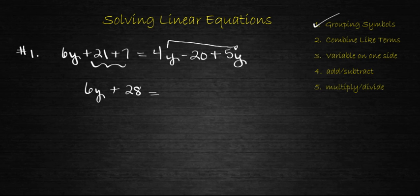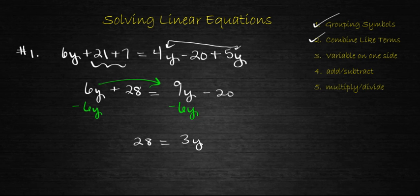On the right side, we have two variable terms. So 4y + 5y is going to give me 9y - 20. From there, we need to make sure that the variable is on one side of the equation. I personally like to move the smallest variable so that I don't have to worry about negatives a whole lot. So if I move that 6y to the right side of the equation, I'm going to need to subtract 6y. What I'm left with is 28 = 3y - 20.